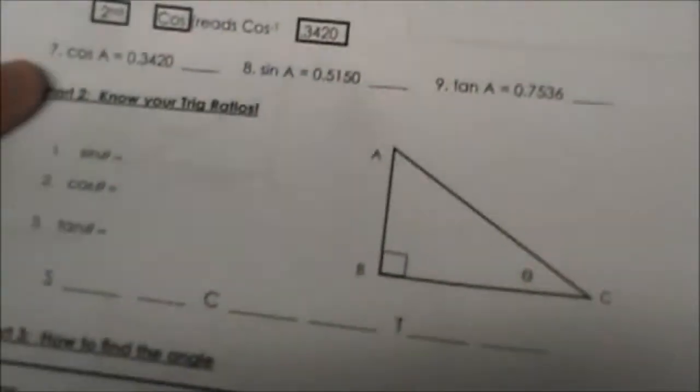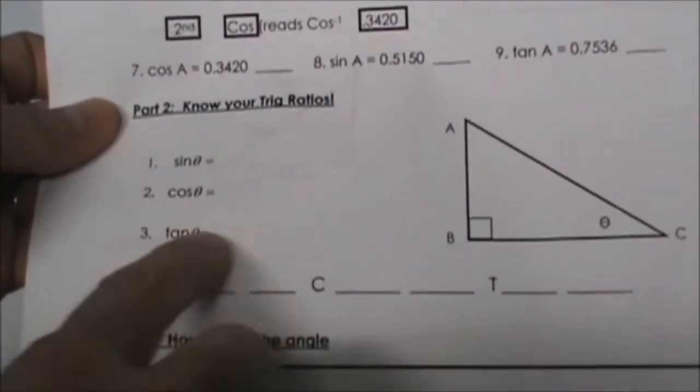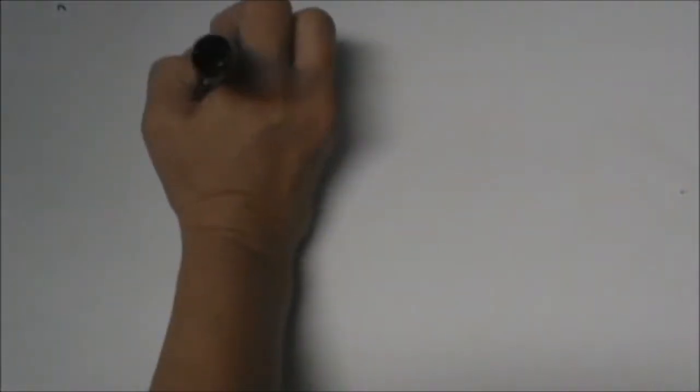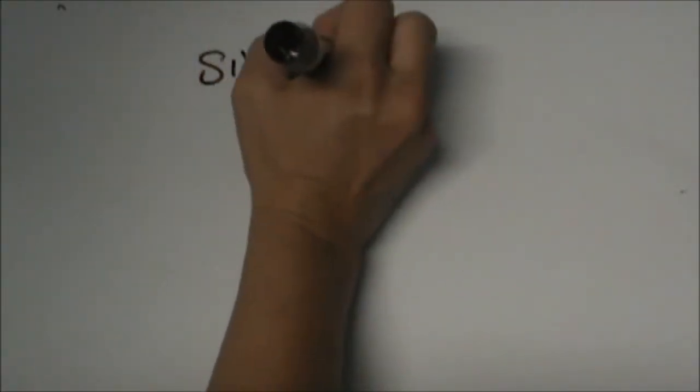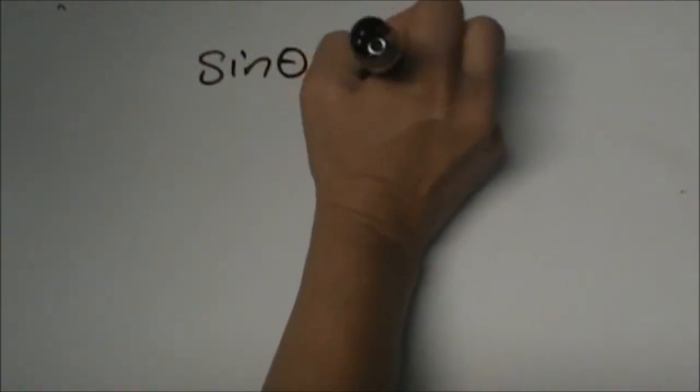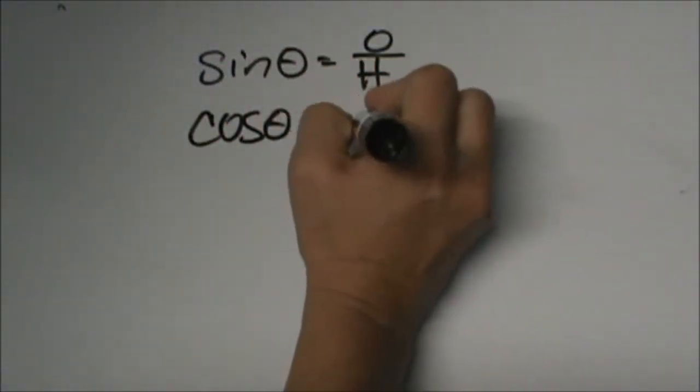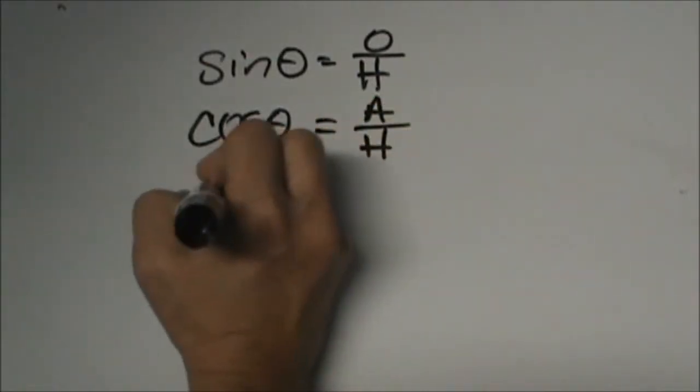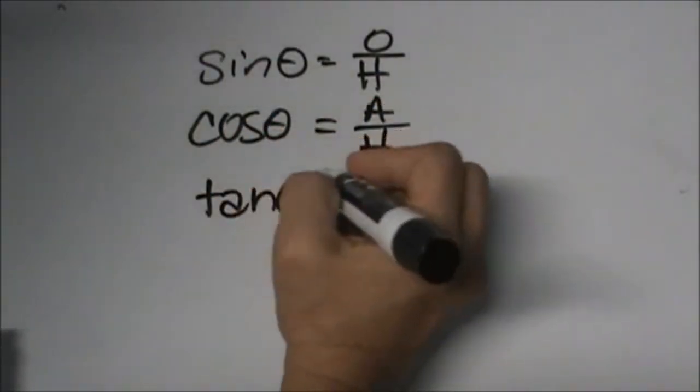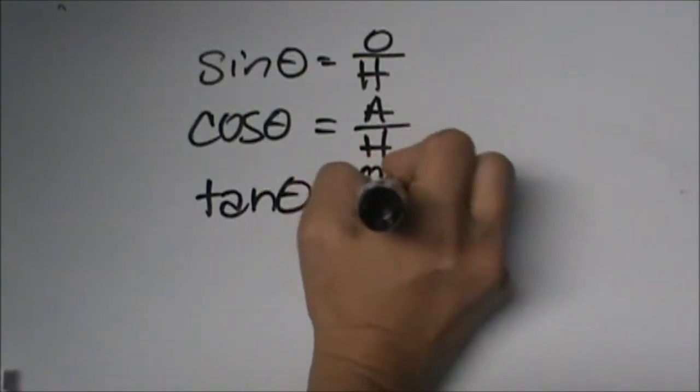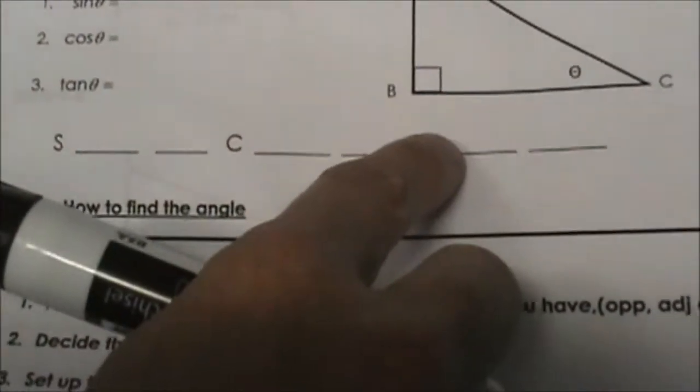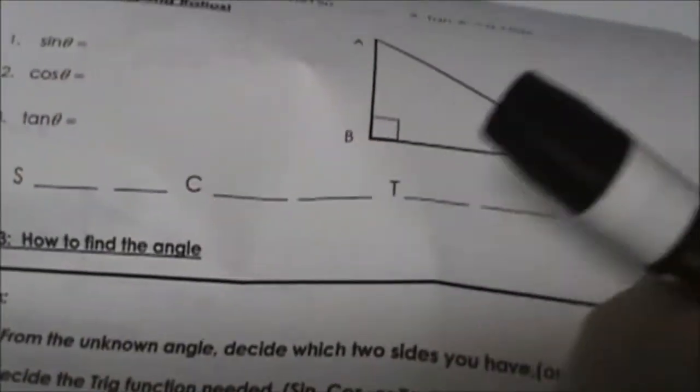Hopefully by now in part 2 of your notes you have sine, cosine, and tangent. Let's go ahead and fill in our ratios. Sine is opposite over hypotenuse, cosine is adjacent over hypotenuse, and tangent of theta is opposite over adjacent. Have that memorized. On the bottom you can fill in SOH CAH TOA so you have that reference.